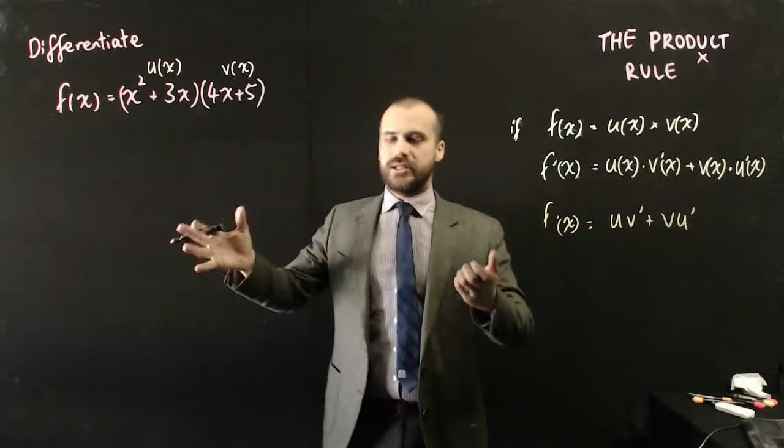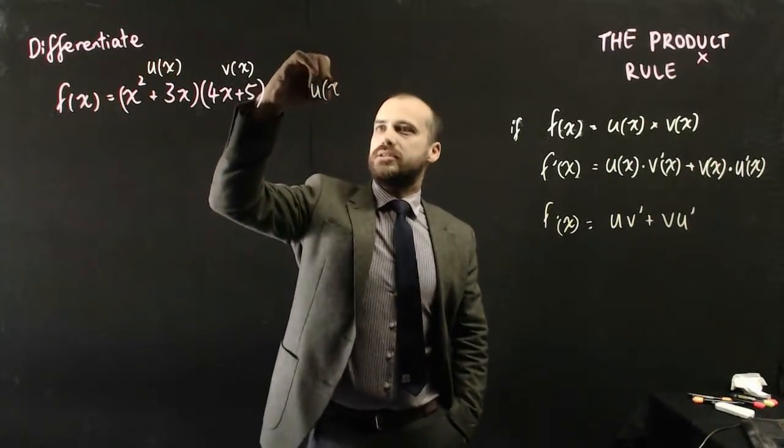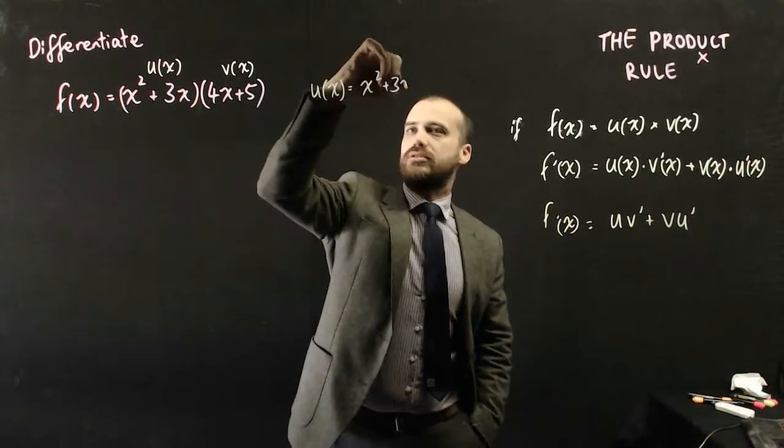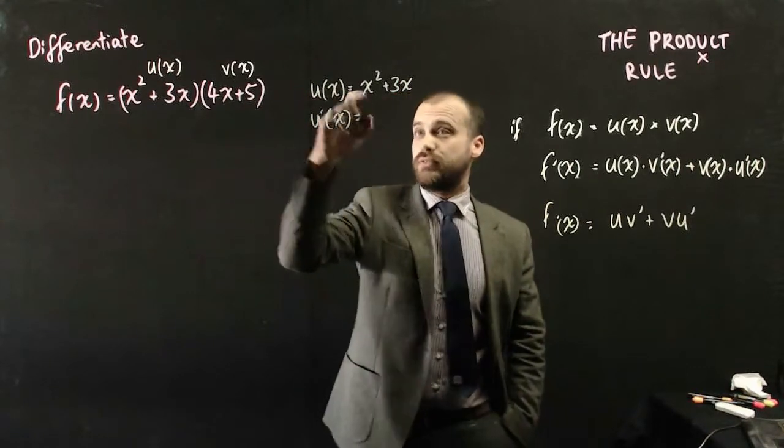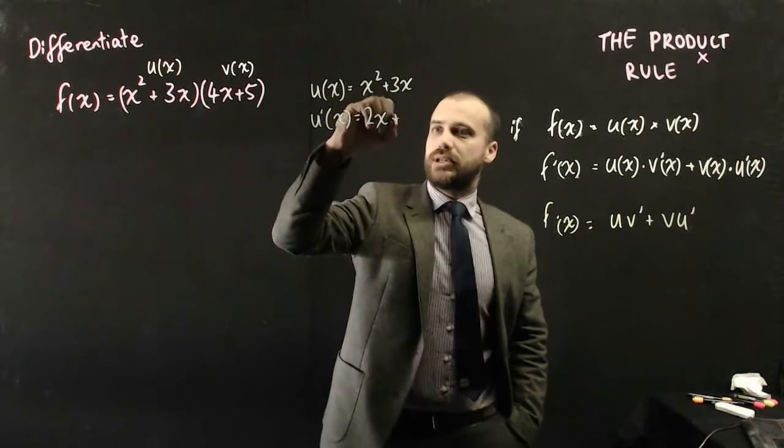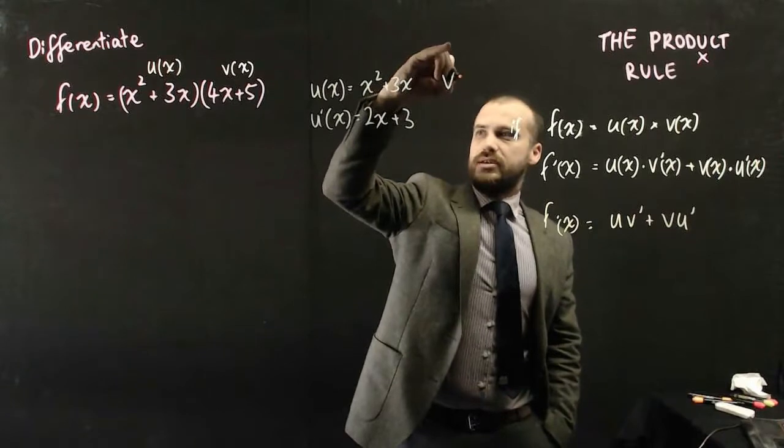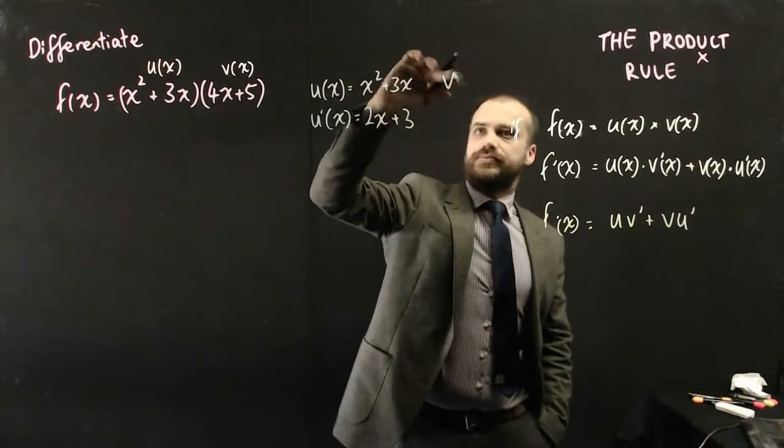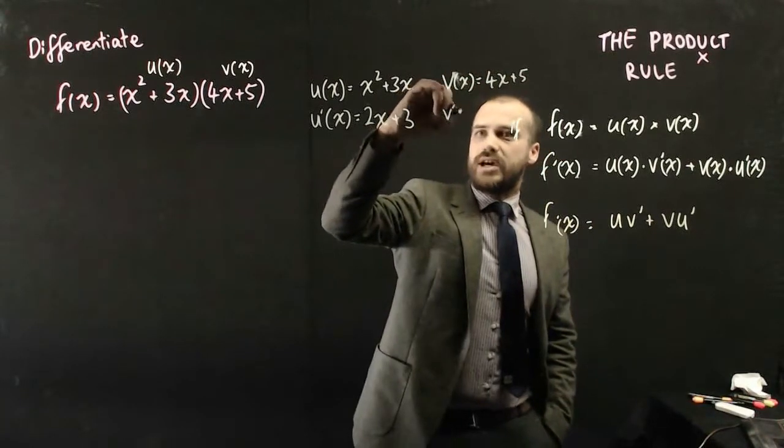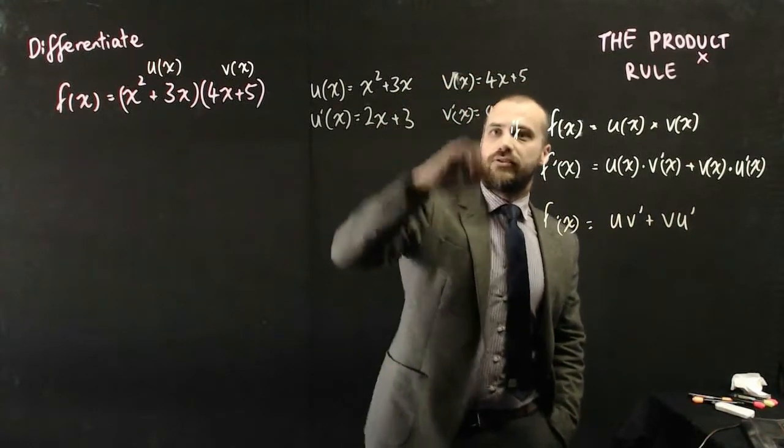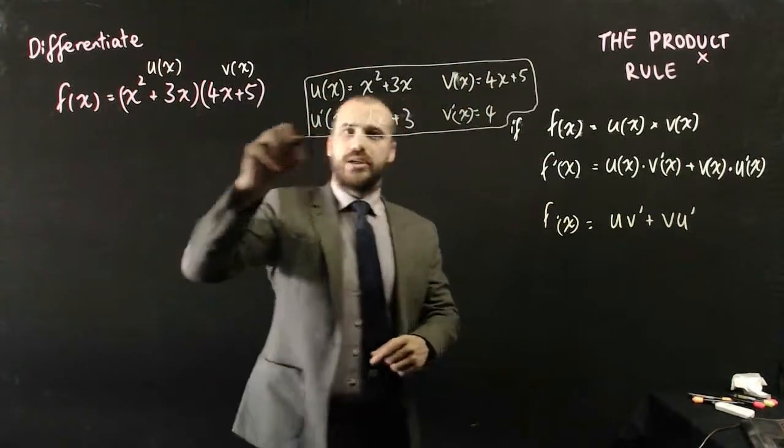So how am I going to set this up? Well, I'm going to set it up by saying u(x) equals x² + 3x. u'(x) is equal to the derivative of that, 2x + 3. Normally I do this bit over here, so v(x) is equal to 4x + 5, and v'(x) is equal to 4. So this bit of working here is a nice bit of working to get us started.